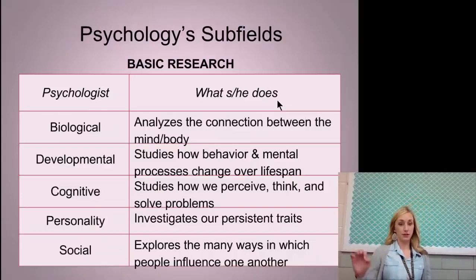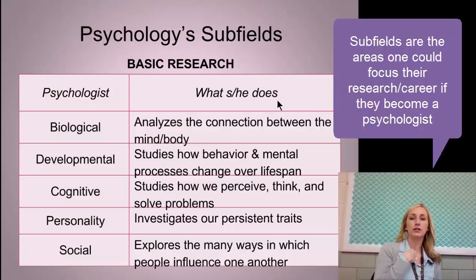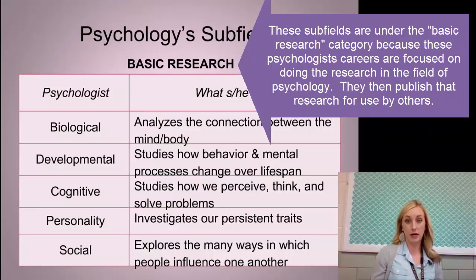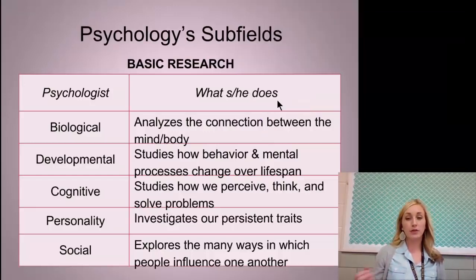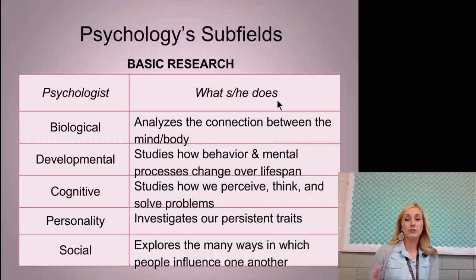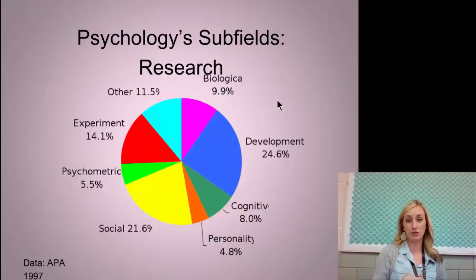Let's talk about subfields, which is a whole other objective in psychology. Subfields for basic research: if you wanted to become a psychologist doing basic research, you could go into biological — all about the connection between mind and body and neurotransmitters. Developmental covers our life span and when we develop things like language and cognition. Cognitive covers how we perceive, think, and solve problems. Personality involves persistent traits and how personality develops. Social explores the ways in which others influence the individual and vice versa. Big ones being developmental as well as social.